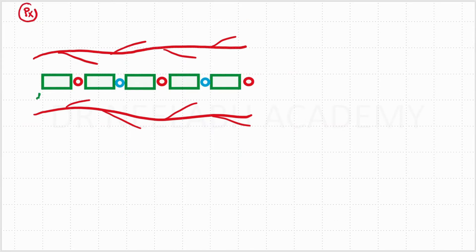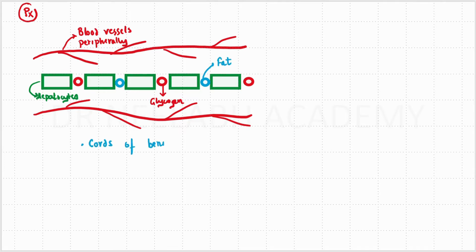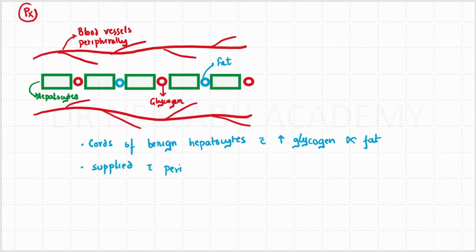This is a hypothetical representation of the liver architecture in this hepatic adenoma. You can see hepatocytes, peripheral blood vessels, red glycogen and blue fat. This is the cords of benign hepatocytes with glycogen and fat which are supplied with peripheral artery vessels.